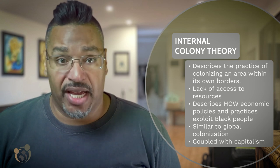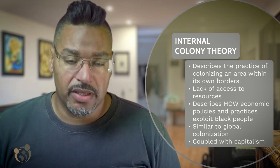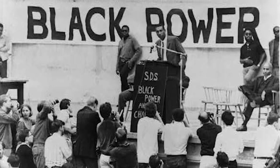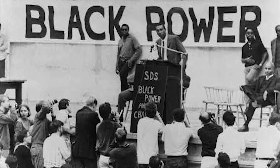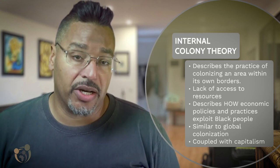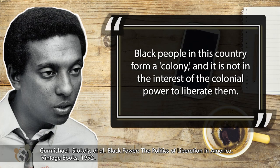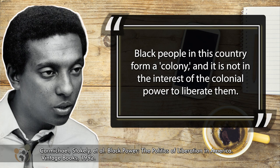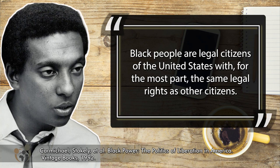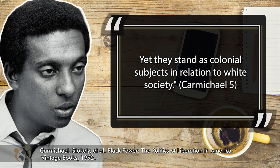For that reason, black power advocates in the 1960s and 70s largely embraced the internal colony model. Stokely Carmichael popularized the concept of internal colonialism along with members of the Student Nonviolent Coordinating Committee, or SNCC, during the late 1960s. In his book, Black Power: The Politics of Liberation in America, Stokely Carmichael argues that black people in this country form a colony and it is not in the interest of the colonial power to liberate them. Black people are legal citizens of the United States with, for the most part, the same legal rights as other citizens, yet they stand as colonial subjects in relation to white society.